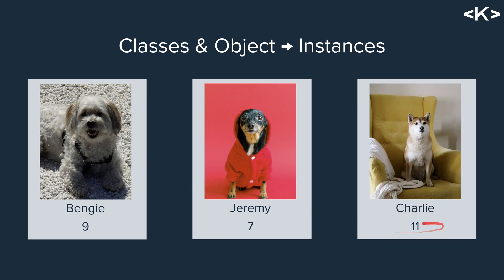We can continue — here we have Charlie, who is 11. Again, this is a different instance of the same class. The general idea is: while they're all dogs, they're all different individual dogs. The same applies to persons — you and your brother are both of a person class or human class, but you're two different individual humans, so you would be different instances of that particular class.